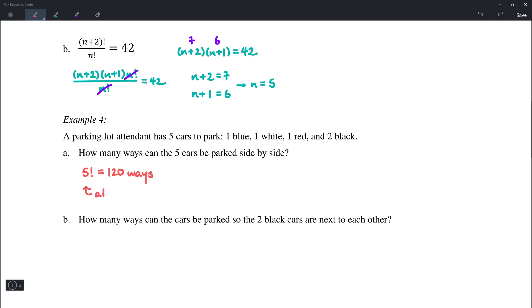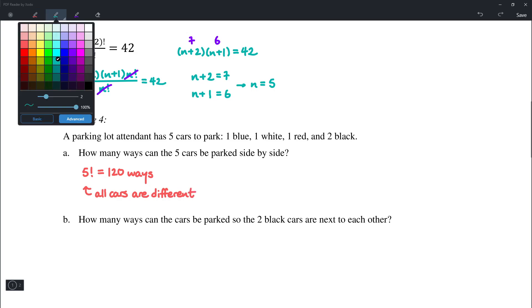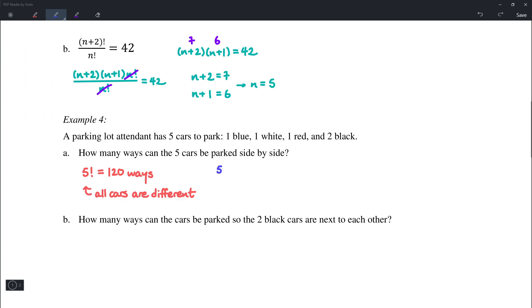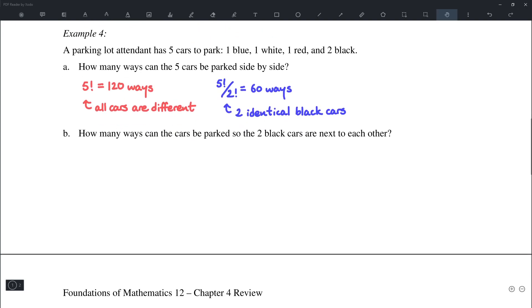This is assuming that all five cars are different. However, if the two black cars are actually identical, then we have 5! divided by 2!, which is equal to 60 ways. And that is the difference between whether all five objects are distinguishable or if there are repeats.